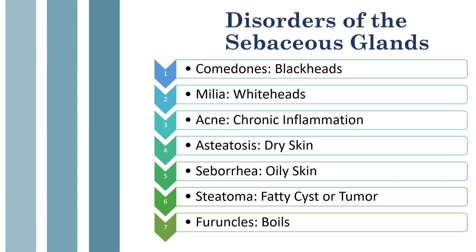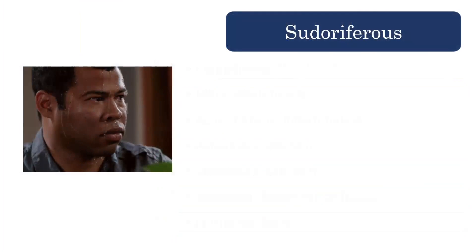Osteatosis is dry skin, meaning your sebaceous glands are not producing enough oil. Seborrhea is oily skin — your sebaceous glands are overproducing. Steatoma is a fatty cyst or tumor. And a furuncle — which is also known as a boil. These are all things associated with your sebaceous glands, so just some things to memorize as you prep for that state exam.